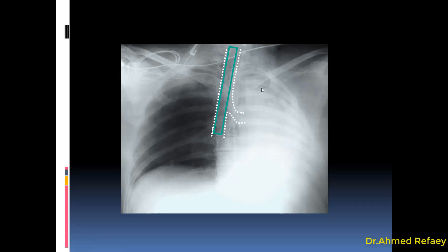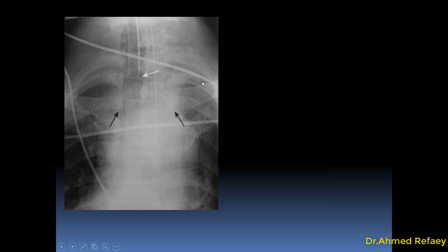This is another example of proximal malpositioning of the endotracheal tube. As you can see, the tip is above the level of the medial end of the clavicles, creating the risk of damage to the vocal cords.